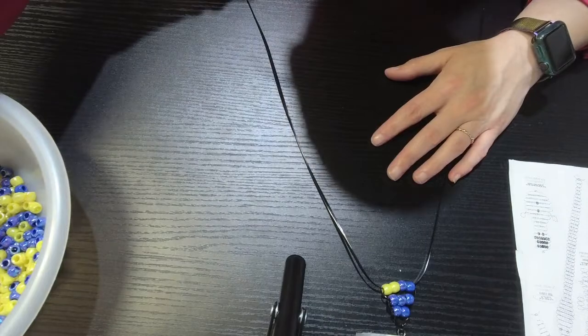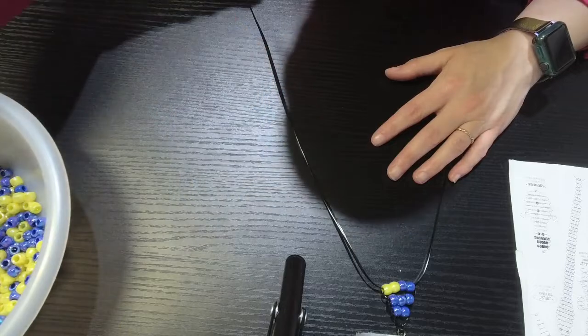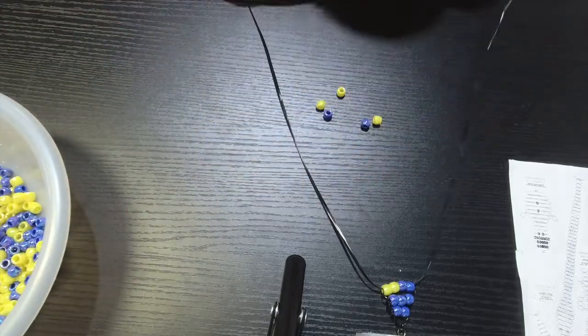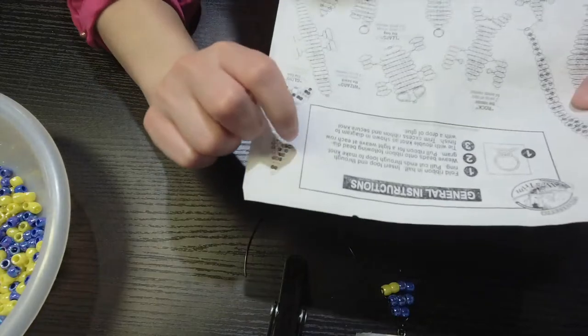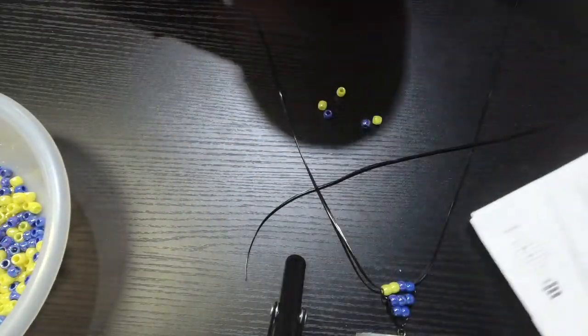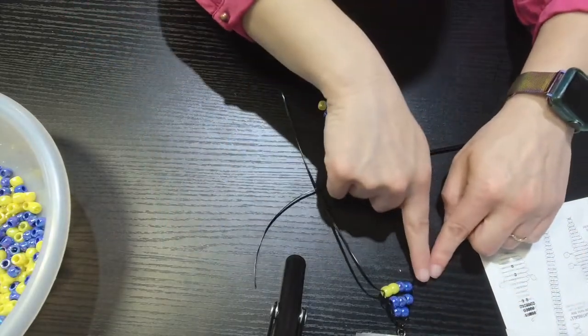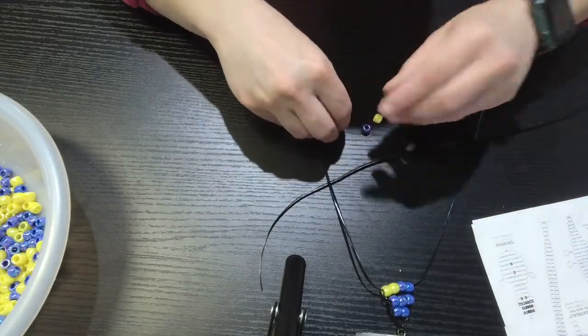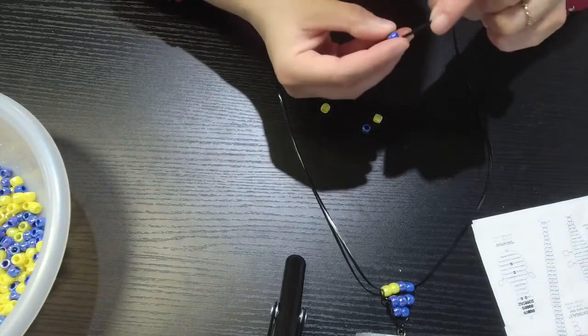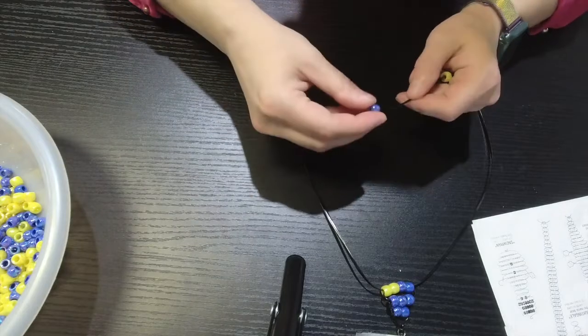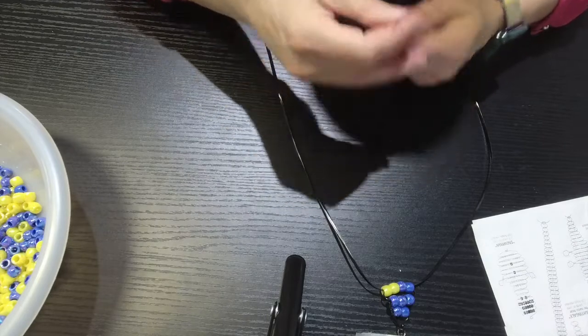So if you are starting your pattern, say you're reading it from left to right like you're reading a book, you always want to start the pattern from the side where if you were reading it, if it's starting on this side, you want to start it from that side of the pattern. So if it says blue, yellow, blue, yellow, yellow, you want to string on blue, yellow, blue, yellow, yellow to get it to go in the proper order.